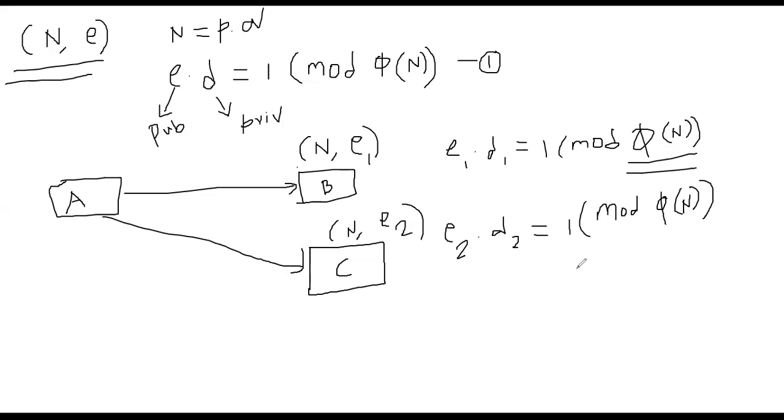What it means is that, let's say you have Alice, user A, Bob, and Charlie. Look at the public key of Bob and Charlie. Bob has n e1, Charlie has n e2.